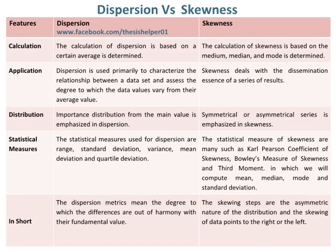Dispersion is used primarily to characterize the relationship within a data set and assess the degree to which the data values vary from their average value, whereas skewness deals with the dissemination essence of a series of results. Importance of distribution from the main value is emphasized in dispersion.